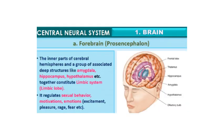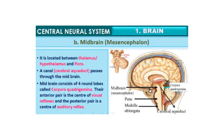The inner parts of the cerebral hemispheres and a group of associated deep structures — like the amygdala, hippocampus, and hypothalamus — together constitute the limbic system or limbic lobe. This regulates sexual behavior, motivations and emotions such as excitement, pleasure, rage and fear of an individual.